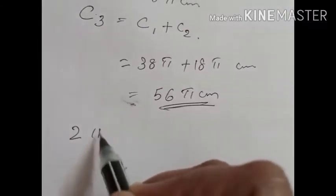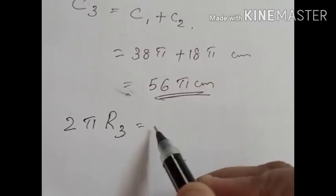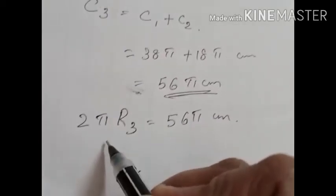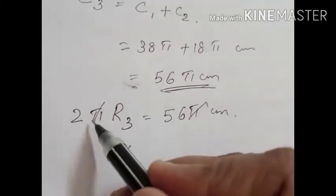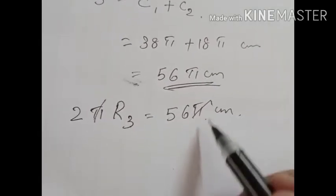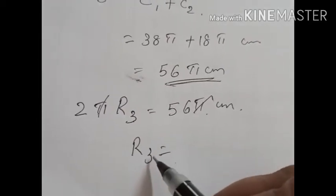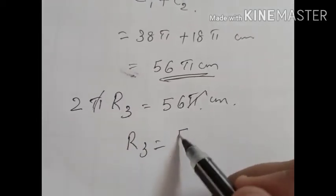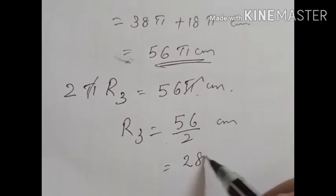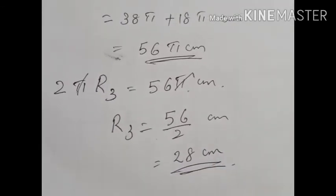That means 2 Pi R3 equals 56 Pi cm, where R3 is the radius of the new circle. Pi and Pi cancel when we transpose. So R3 equals 56 by 2, which is 28 cm. Therefore, the radius of the third circle is 28 cm.